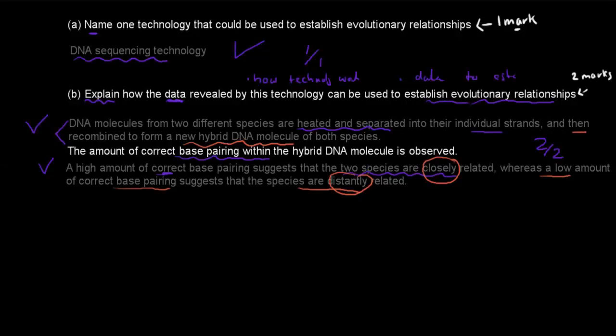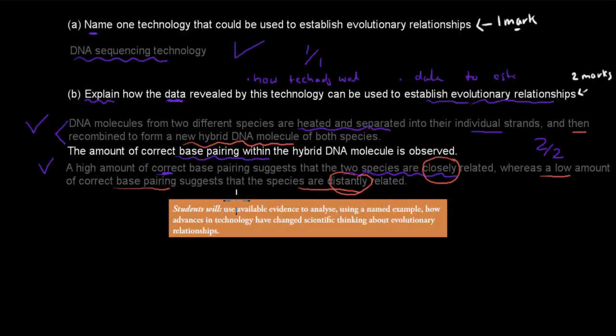And where did this question come from? It came from this dot point here. So the dot point says students will use available evidence to analyze, that's the verb given, using a named example. So it says that's why we need to know the actual technology, how advances in technology have changed scientific thinking about evolutionary relationships. So because this dot point says analyze, includes example, the verb explain is included in that verb analyze. Analyze is a higher order verb which means it actually includes explain.